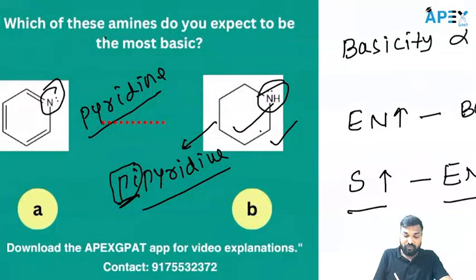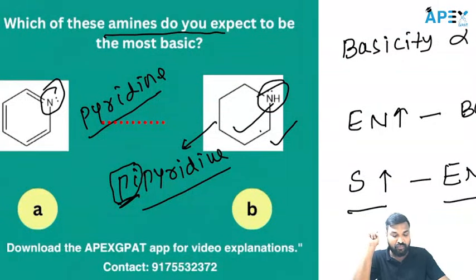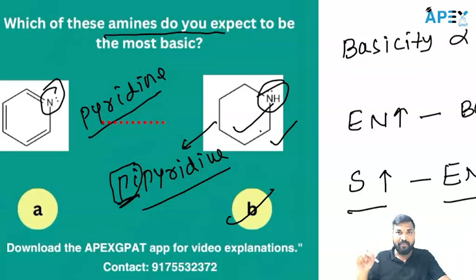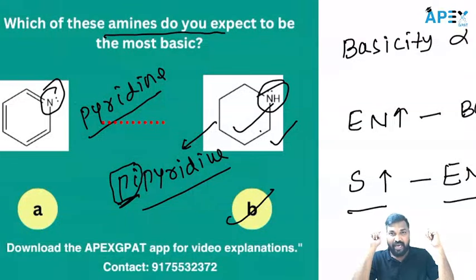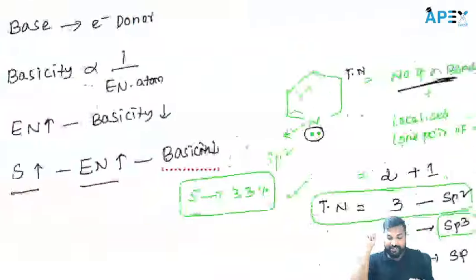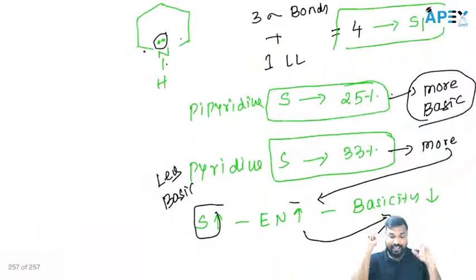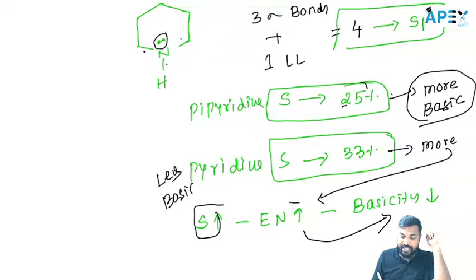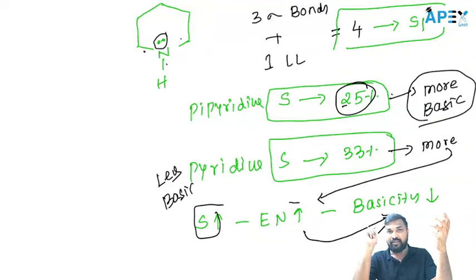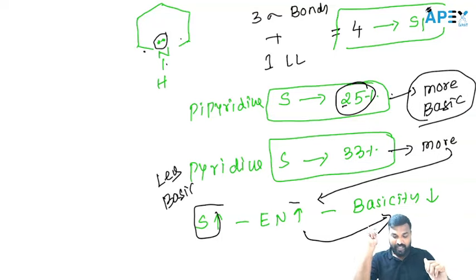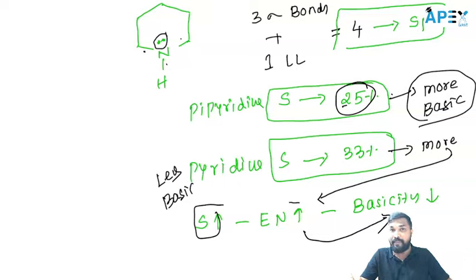The question is: which of these amines do you expect to be the most basic? The answer is option B — piperidine. This is the most basic because its s-character is less. If the s-character is less, electronegativity is less, and it is more basic. Piperidine is more basic compared to pyridine.